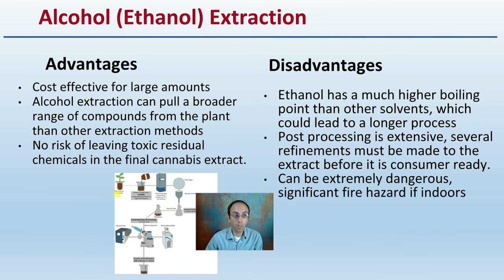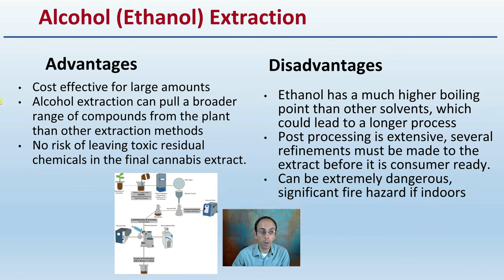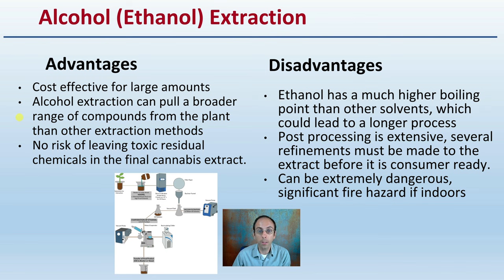You might also consider alcohol or ethanol-specific extraction. This is very cost-effective for large amounts, and alcohol extraction can pull a broader range of compounds from the plant than other methods, with no risk of leaving toxic residual chemicals in the final extract. However, ethanol has a much higher boiling point than other solvents, leading to a longer process. Post-processing is extensive, and several refinements must be made before the extract is consumer-ready. It can also be an extreme fire hazard if used indoors, as ethanol and alcohol in general are highly flammable.